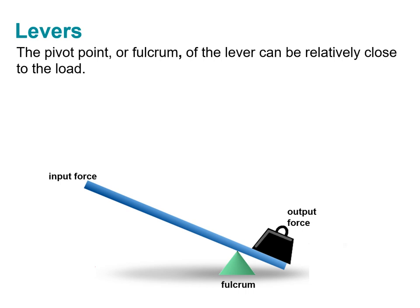If you place the pivot or fulcrum close to the load, to the thing that's being lifted, which we're calling the output force, then you'll find that it requires a relatively small input force. However, you may also notice that the output goes only a very short distance, whereas the input has to move a much longer distance.